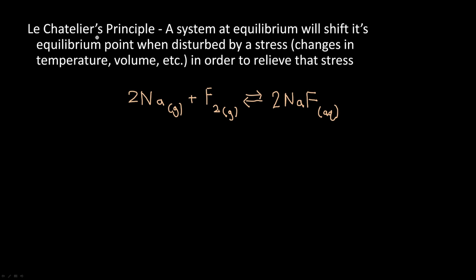Le Chatelier's Principle basically states that a system at equilibrium will shift its equilibrium point when disturbed by a stress — things like changes in temperature, volume, concentration, etc. — in order to relieve that stress. So basically, you disturb a system at equilibrium with a stress, and it's going to shift its equilibrium point in response to try to nullify it.